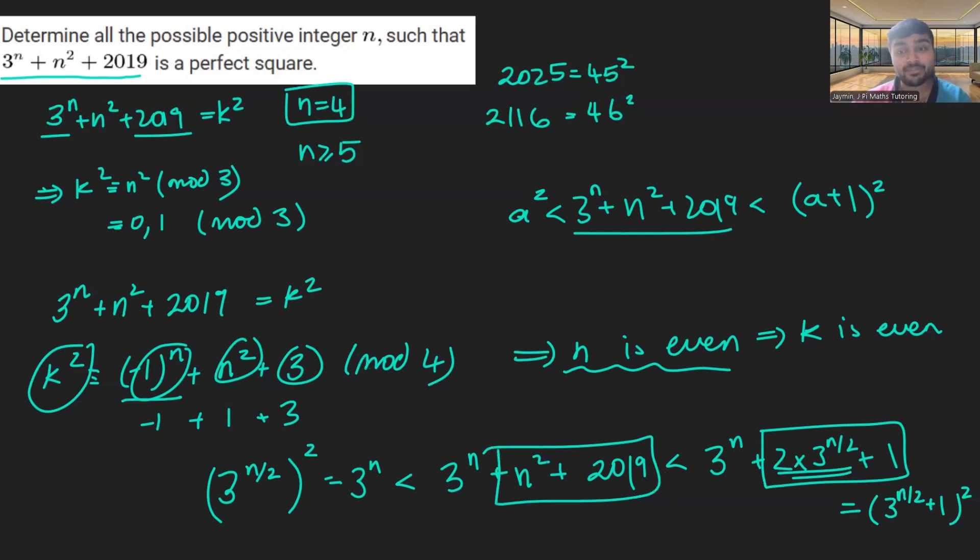So whenever n is bigger than 14, this expression is sandwiched between two consecutive squares. And therefore, all we need to do is check the numbers 1 through 13. But we can actually reduce that list because, well, firstly, we've dealt with the first four cases. So we only need to deal with n at least 5. But we also know that n is an even number, which is either 0 or 1 mod 3. So we just need to test 6, 7, 9, 10, and then 12, 13. Those would be the only numbers we would need to test.